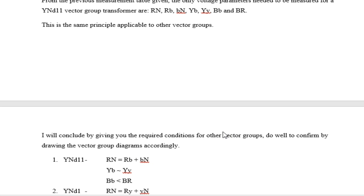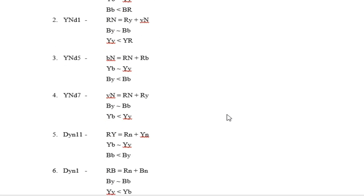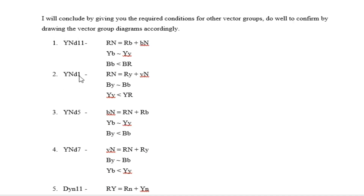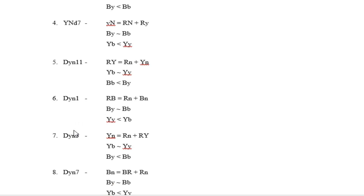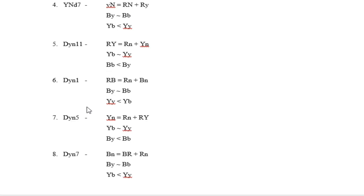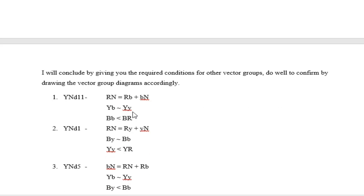I'm sure you can do the other tests by yourself. If you have any problems or challenges, ask in the comment section and I will answer you. The conditions shown cover YND 1, YND 5, YND 7, YND 11, DYN 1, DYN 5, and DYN 7. If testing for only one vector group, measure only what is needed; if giving a full recommendation, measure everything on the table.